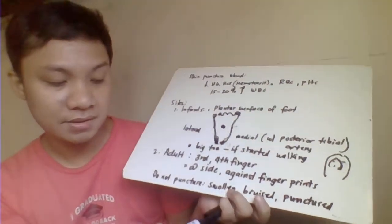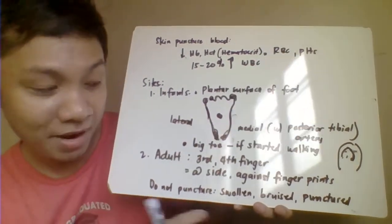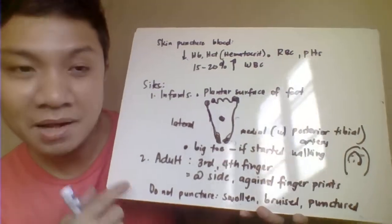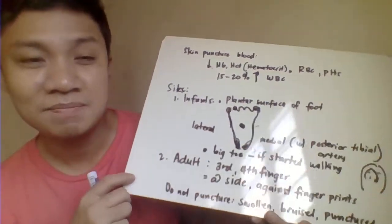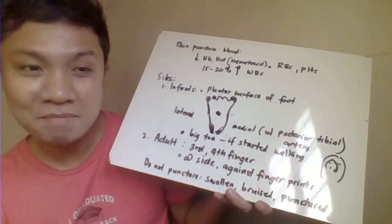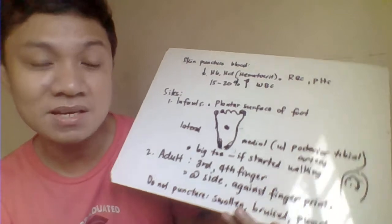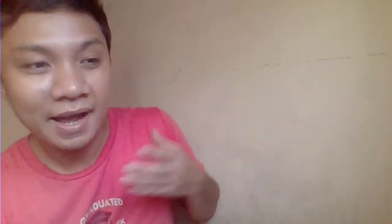There are also areas that should not be punctured: swollen, bruised, and previously punctured areas. Sometimes there is no choice — for example, when monitoring platelet count in dengue patients, you may need to puncture repeatedly and run out of suitable sites. But as much as possible, if you have a choice, avoid swollen, bruised, and punctured areas.